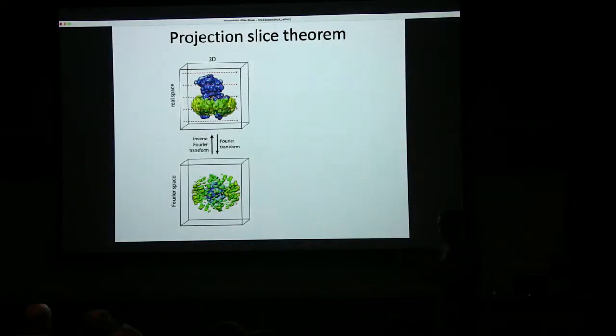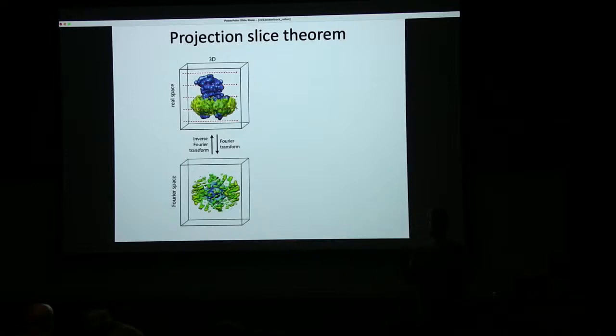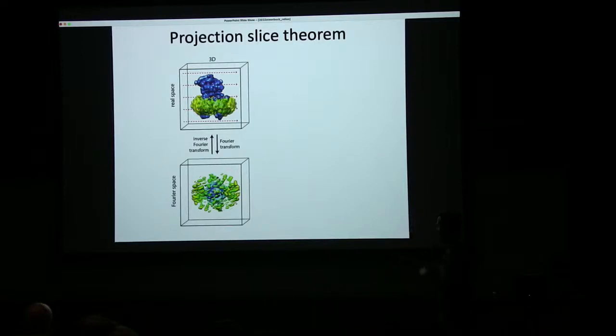What we want to do is calculate a three-dimensional reconstruction of the scattering potential of the object. In first instance we'll assume all these ribosomes are in an identical structural state, and all that differs is their projection direction. Three-dimensional reconstruction is best understood in Fourier space. If we have a three-dimensional object we can discretize it on a 3D grid and take a discrete Fourier transform — that's just a mathematical operation using standard libraries to go very quickly back and forth; it's the same information expressed in a different way.